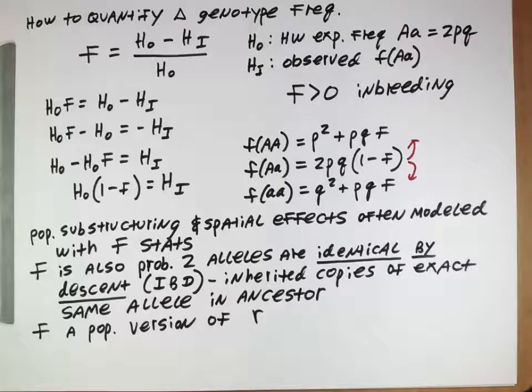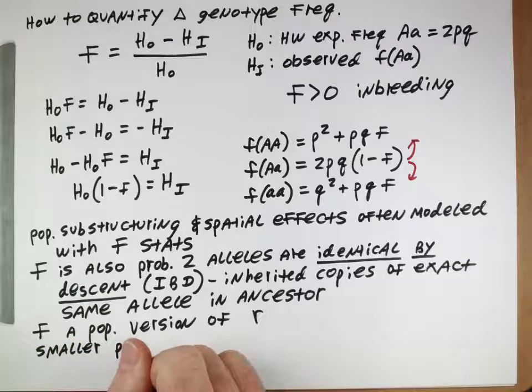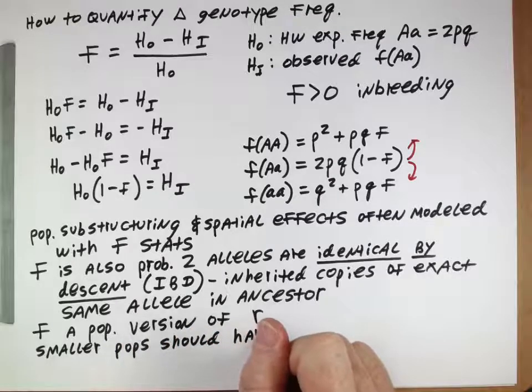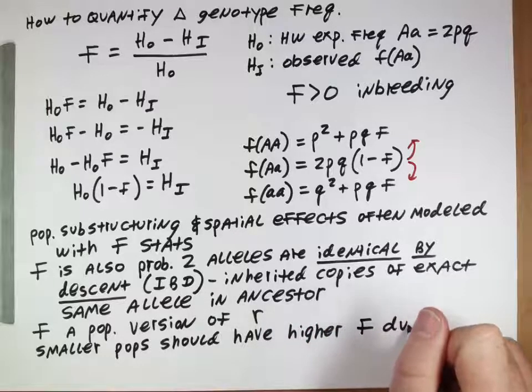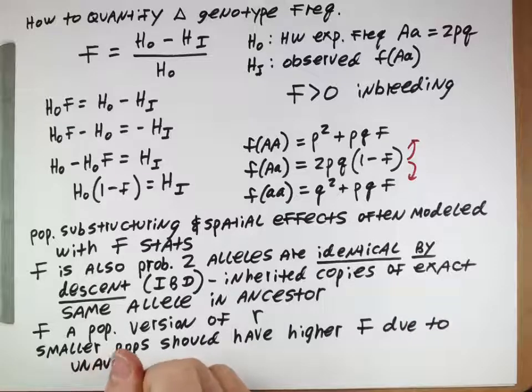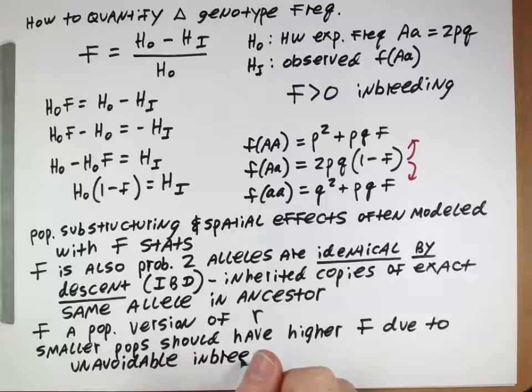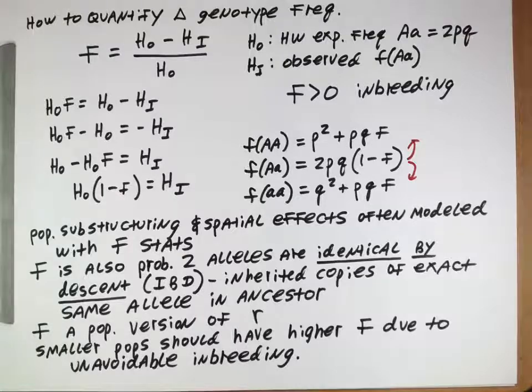The final thing to note about this is that smaller populations should have and actually will have higher values of F due to what we can call unavoidable inbreeding. We've been thinking about inbreeding as genotypes searching each other out and mating with similar genotypes. But if you have a small population, at a certain point it becomes impossible to find individuals that you're not related to to mate with them.